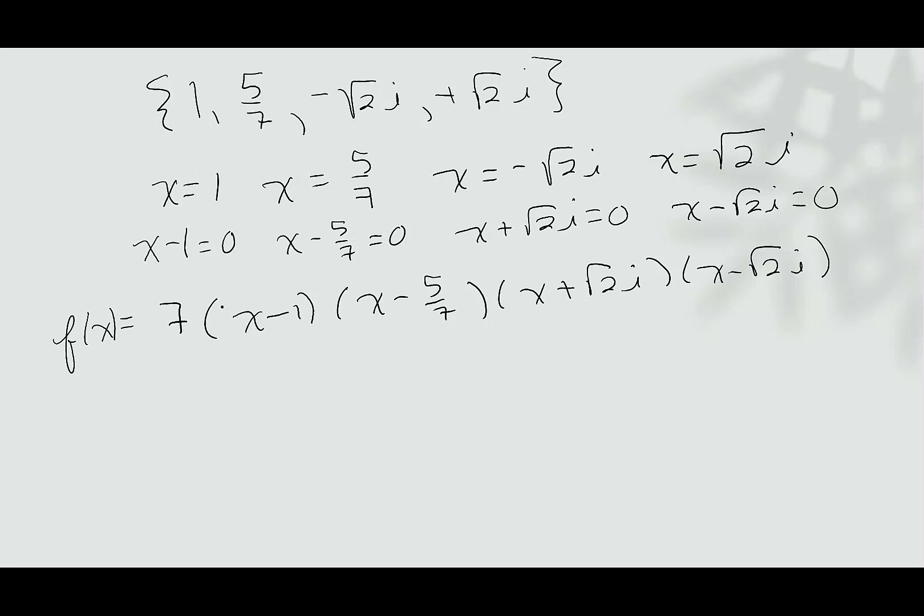You have two choices for how to write the final answer. You could leave it like this with the 7 in front. You could also multiply the 7 through the factor x - 5/7, which would give us f(x) = (x - 1)(7x - 5)(x + √(2i))(x - √(2i)).